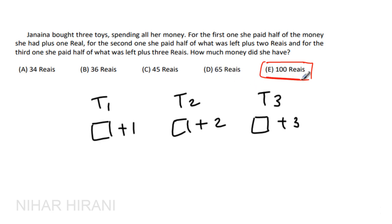Let's assume she had 100 in the beginning. Now if she had 100 in the beginning, she will spend half of that - that's 50 plus 1, which means 51.